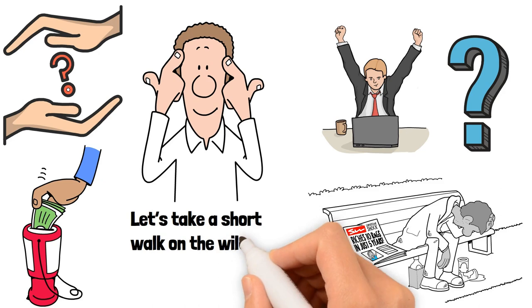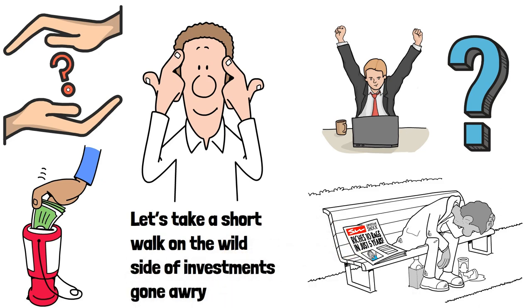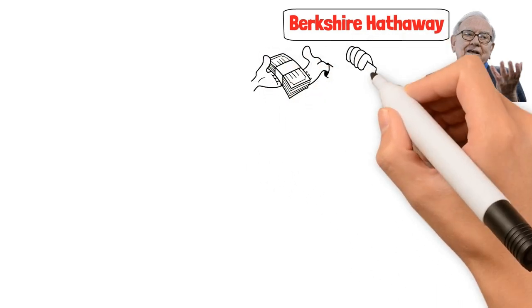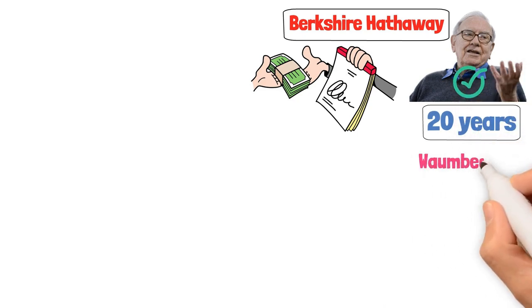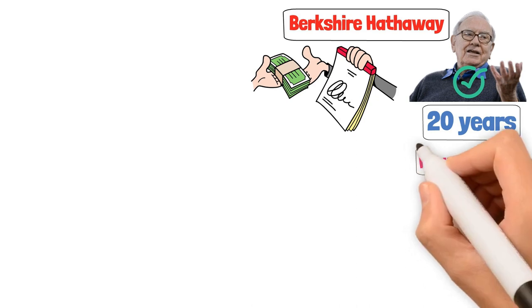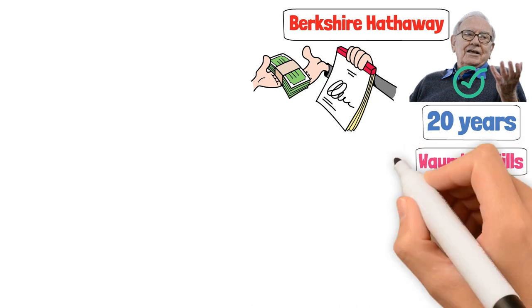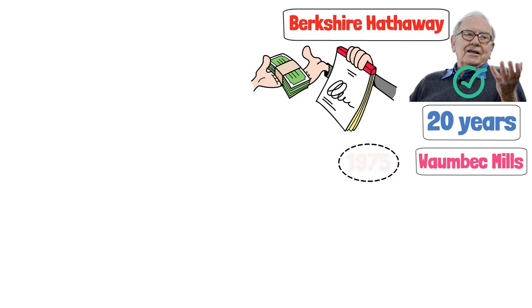Now let's take a short walk on the wild side of investments gone awry. Warren Buffett himself has had his share of missteps. One notable error was buying Berkshire Hathaway when it was a failing textile company. Buffett's emotional decision to buy more of the company out of spite ended up costing him dearly in the long run, as he kept the struggling business running for another 20 years. Buffett repeated a similar mistake by purchasing Wombeck Mills, another New England textile company, which had to be shuttered not long after its acquisition by Berkshire in 1975.